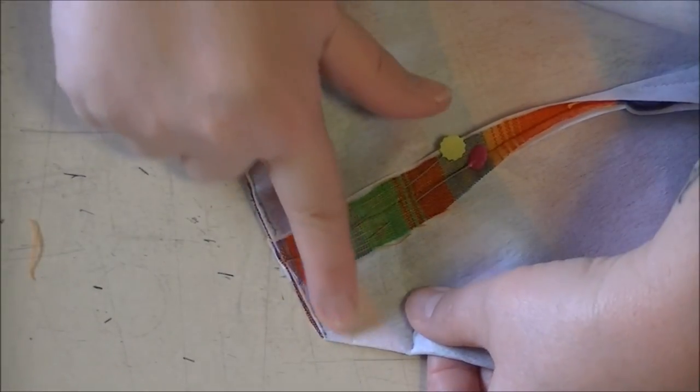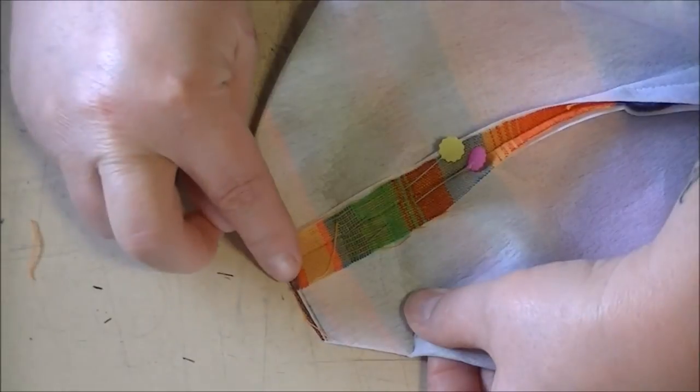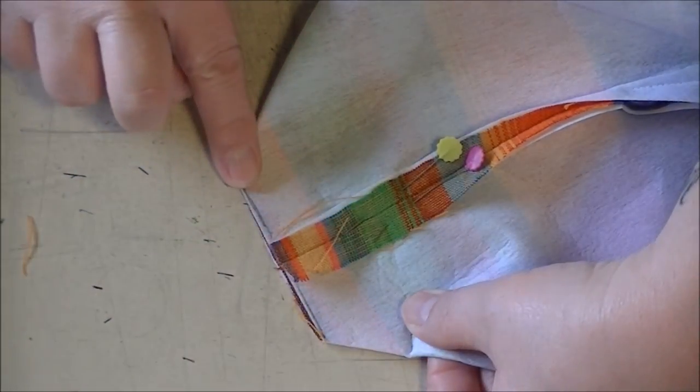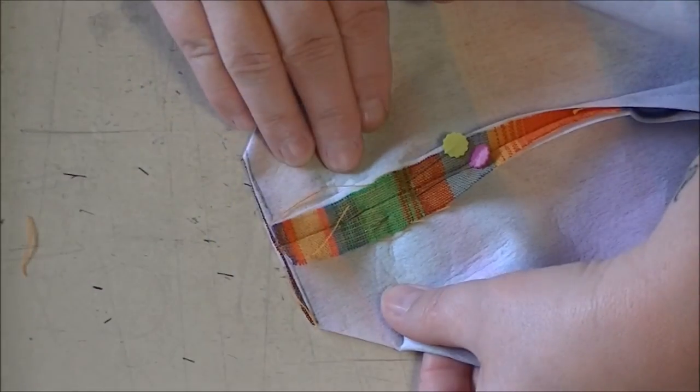Now I'm going to go over to the machine and I'm going to use this edge and the edge of my presser foot as my guide and I'm going to sew straight across here. And I'm going to do the same thing with the other side.